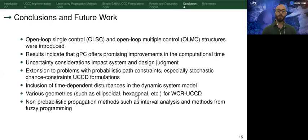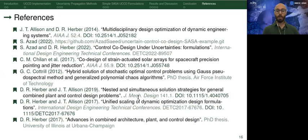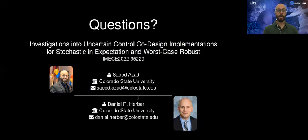In conclusion, we introduced open-loop optimal control structures and we demonstrated the utility of generalized polynomial chaos and some of the worst-case robust formulations. There are also multiple directions for future work. These are some of the references that are used in this presentation, and thank you so much for your attention.